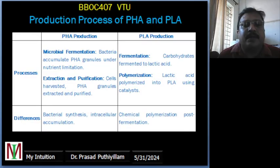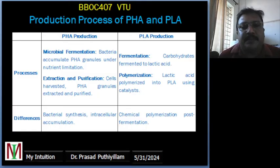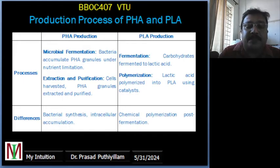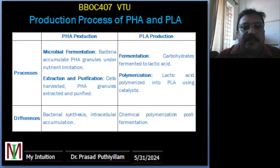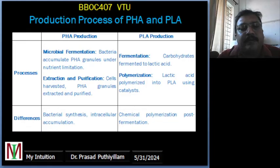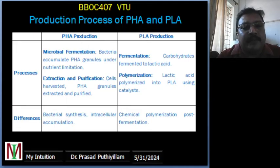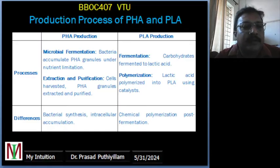The production of PHA involves two main steps: microbial fermentation and extraction/purification. In microbial fermentation, bacteria such as Cupriavidus necator are cultivated in a nutrient-rich environment that is limited in specific elements like nitrogen. This causes the bacteria to produce and accumulate polyhydroxyalkanoate granules inside their cells. For instance, in laboratory conditions, Cupriavidus necator can be grown in a sugar solution to produce PHB.